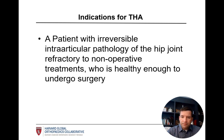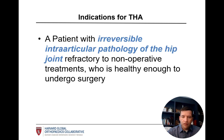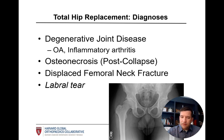The appropriate patient who is a candidate for an elective total hip arthroplasty is a patient with irreversible intraarticular pathology of the hip joint that has been refractory to non-operative treatments and who is healthy enough to undergo surgery. Examples of those irreversible intraarticular pathologies include degenerative joint disease. Osteoarthritis is the most common diagnosis encountered in patients requiring total hip replacement.